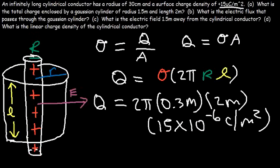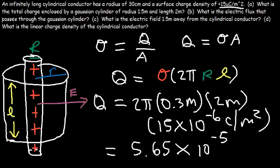This equals 5.65×10⁻⁵ coulombs. The units of meters cancel, so this is the total charge enclosed by the Gaussian cylinder.